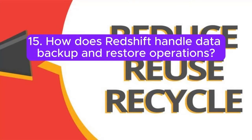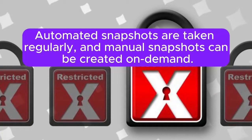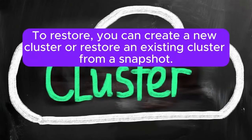Question 15: How does Redshift handle data backup and restore operations? Answer: Redshift provides automated and manual snapshots for backup. Automated snapshots are taken regularly, and manual snapshots can be created on demand. To restore, you can create a new cluster or restore an existing cluster from a snapshot.